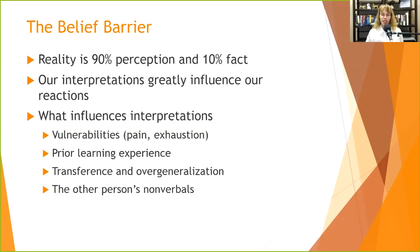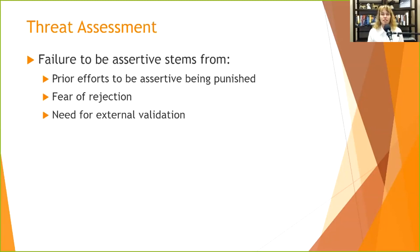We need to identify anything that's causing a perceived threat. The other person's nonverbals may communicate some element of threat. So first, we start with a threat assessment — failure to be assertive often stems from prior efforts at assertiveness being punished. We want to ask: what's the likelihood that if I'm assertive right now, there will be punishment? Then we look at fear of rejection — what's the likelihood that if I'm assertive, this person will reject me or my ideas, and how much do I care?